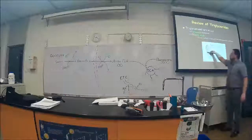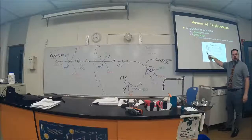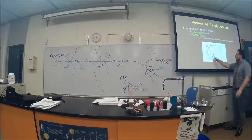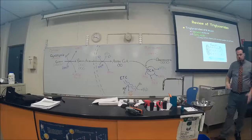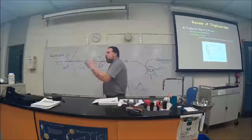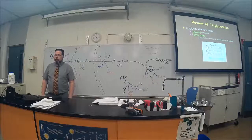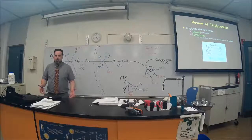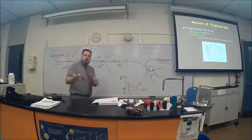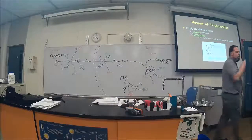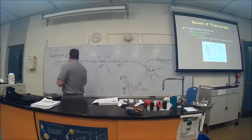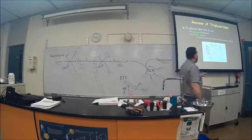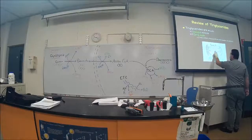So you have a glycerol molecule with some carbons, and then we have long fatty acid chains — they could be anywhere from three carbons to thirty carbons long. The more carbons, the more energy you can get. We talked about saturated and unsaturated fats. In the cytoplasm, the triglyceride breaks up into one glycerol molecule and three fatty acids.